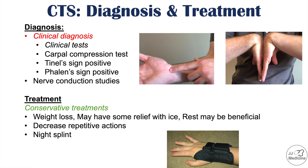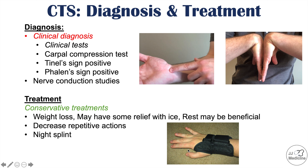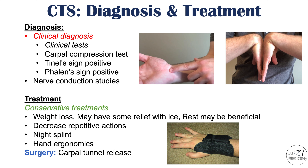A night splint can also be used — since symptoms are worse at night, putting on a splint can help. Hand ergonomics are also important. For surgical options, there is a carpal tunnel release surgery, which releases the compression on the median nerve and allows it to function properly. This is often very beneficial for patients with this condition.